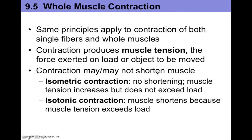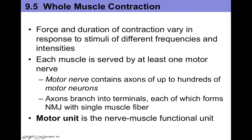The contraction may or may not shorten the actual muscle. An example of this is an isometric contraction, where muscles can produce tension without a significant amount of shortening. This is where the tension increases but does not exceed the load, so the muscles don't change in length. Isotonic contraction is where the muscle shortens because the muscle tension does exceed the load. Force and duration of contraction can vary in response to the amount of stimuli as well as the frequency of stimuli intensities.